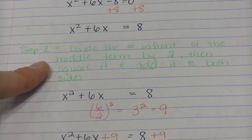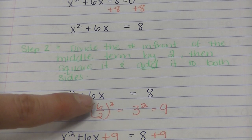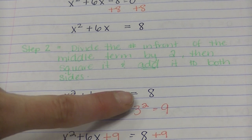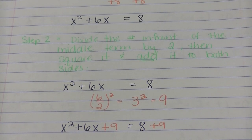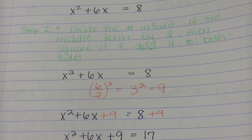So I'm going to take the 6 and divide by 2 and then square it. So 6 divided by 2 is 3. 3 squared is 9. So the 9 gets added to both sides of the equal sign because what I do to one side, I must do to the other.